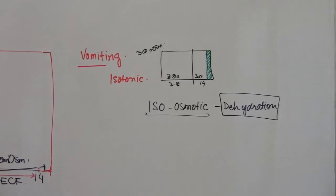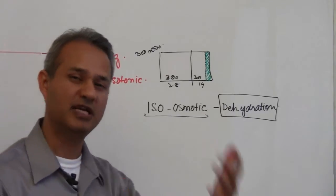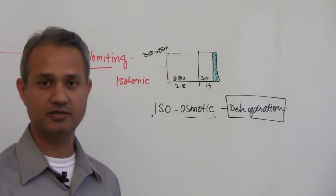In case of isoosmotic dehydration, nothing is going to happen to the ICF, but ECF is reduced in size.